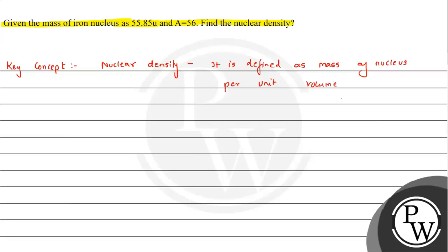In terms of expression, we can write this as rho, that is the nuclear density, equals M upon V, where M is mass of nucleus and V is the volume. We can see that volume of sphere can be given by the formula 4 by 3 pi R cube.